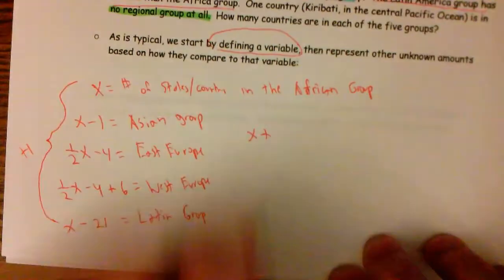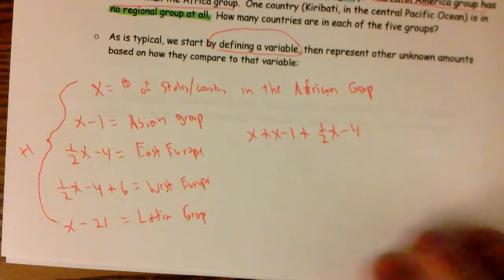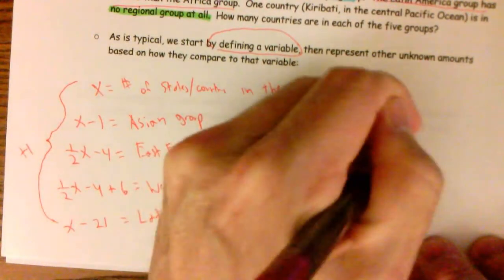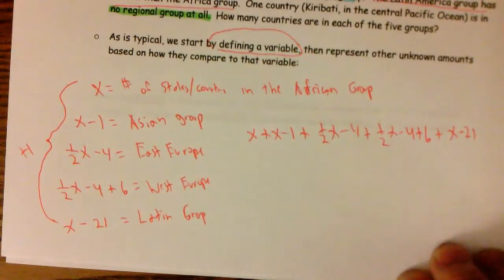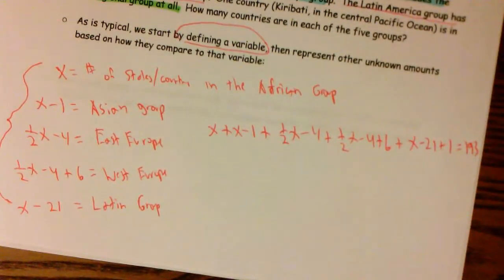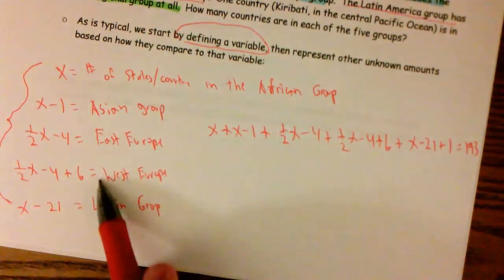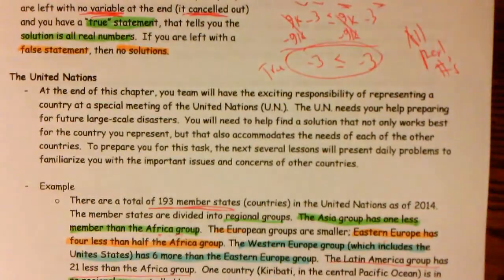So I'd probably set something up like X plus X minus one plus one half X minus four plus one half X minus four plus six plus X minus 21 plus one equals 193. And I could go ahead and solve that for X, although I don't think any of you need me to help you solve that for X. Just add your like terms together and solve it, right? So I think that's enough of that one. The new thing here is, can you read the problem, represent all of the unknown amounts, and use them to set up an equation?